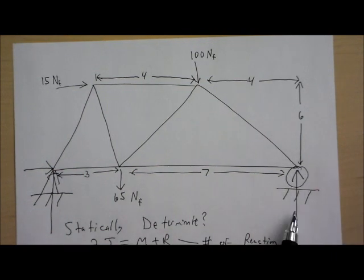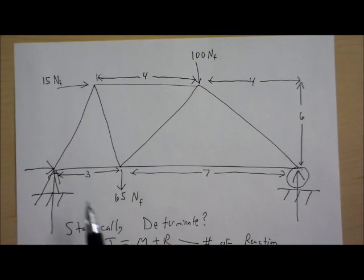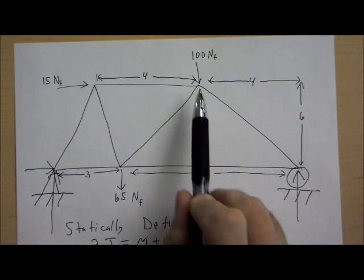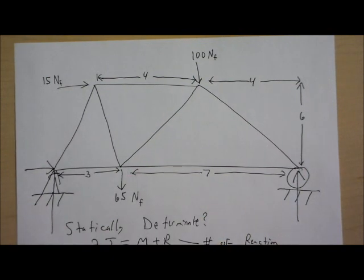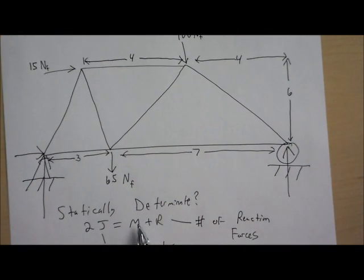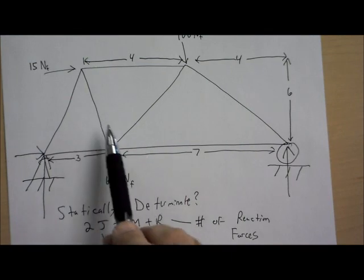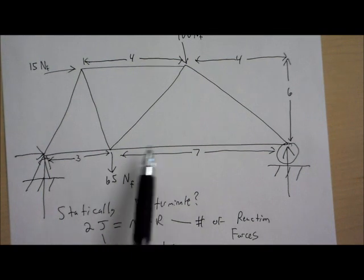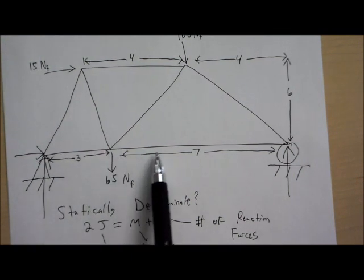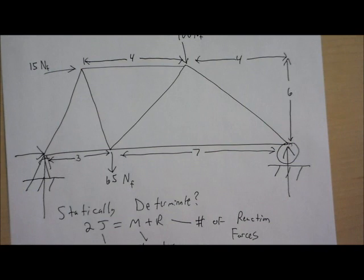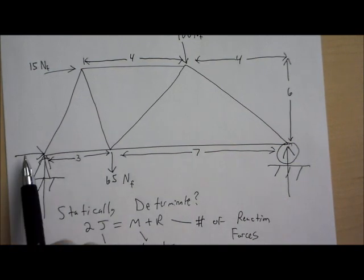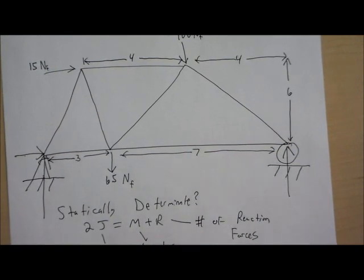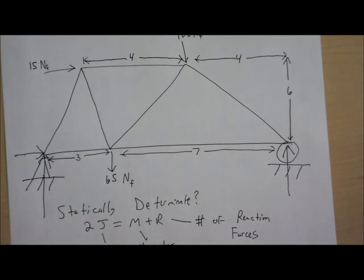So in total we have three reaction forces. So to complete this formula, 2 times j we have 1, 2, 3, 4, 5, 6, 7 members. Make sure that you count these as two separate members. It's not all just one long one. Plus there are three reaction forces because we have one, 2 for the pin and one for the roller. So 10 equals 10. And yes, this can be solved.